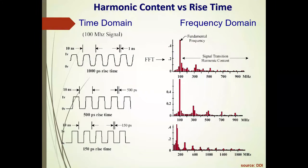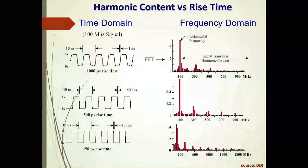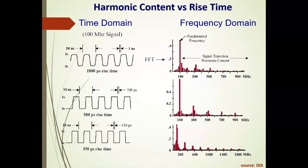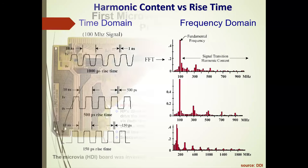A square wave doesn't really exist in nature — it's made up of many fundamental frequencies and harmonics. As square wave rise and fall times drop from one nanosecond to 150 picoseconds or smaller, the harmonic content extends out to 1800 MHz. That produces all kinds of potential signal integrity issues and problems, which is what we'll address today.